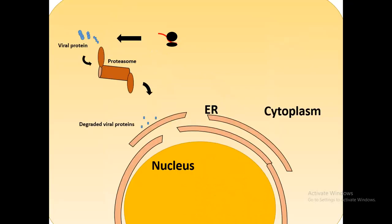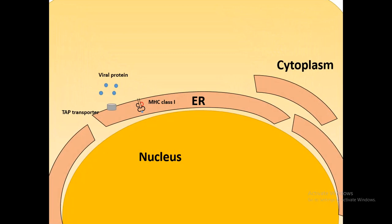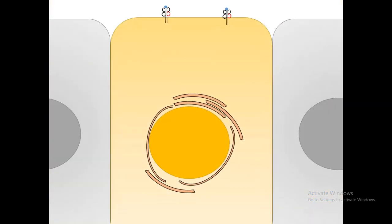But once the viral proteins are made, the cellular degradation machineries like proteasome would degrade the viral proteins. That would enter the ER and be loaded on class 1 MHC molecule. The class 1 MHC molecule would display that viral peptide onto the cell surface.